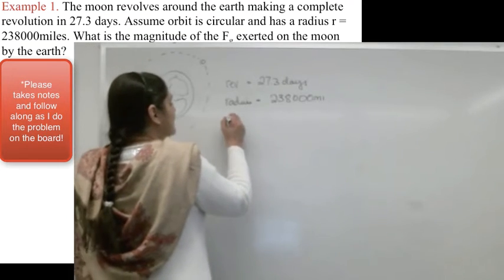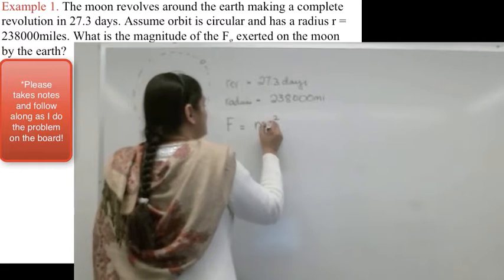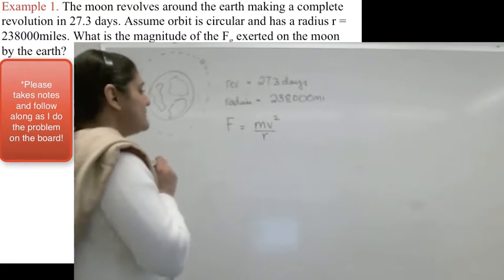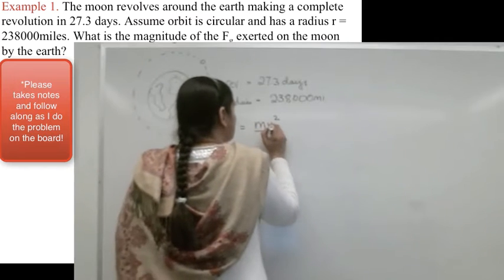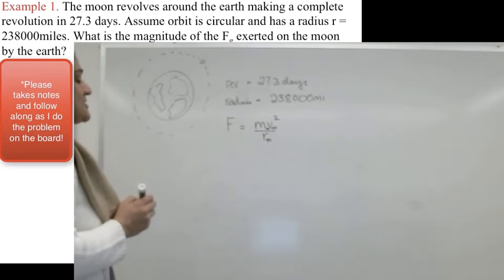First things first, I know that the magnitude of this force is going to be equals to mv squared over r. Which is excellent. So all I have to do is find the m of the Moon, the velocity of the Moon, and the radius of the Moon that I need.